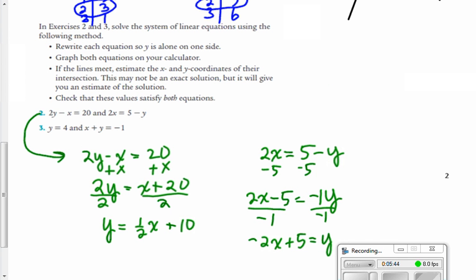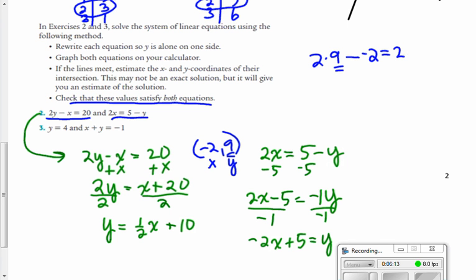All right. And then it says, so we're going to estimate negative 2, 9. Then it says, check that these values satisfy both equations. So what we're saying is x is negative 2, y is 9. Does it satisfy both these equations? So we're going to do 2 times 9. So y is 9. And minus x, which is negative 2, that has to equal 20. And 2 times 9 is 18 minus negative 2 is the same as plus 2. And that's definitely equal to 20. So it works in the first equation.